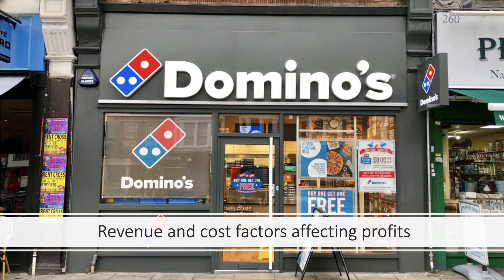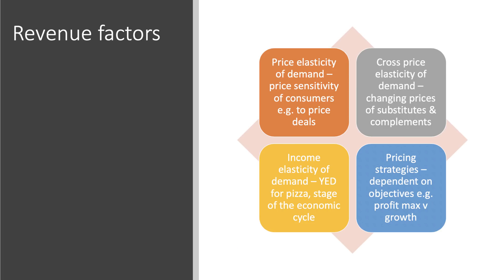I'm going to look at some revenue factors and some cost factors. On the revenue side, I would strongly suggest in an exam going back to your Year 12 work on elasticity of demand. Revenues are affected by the price elasticity of demand - the extent to which Domino's customers are price sensitive - and the impact, for example, of those famous two-for-Tuesday deals in terms of boosting the top-line revenue of the firm.